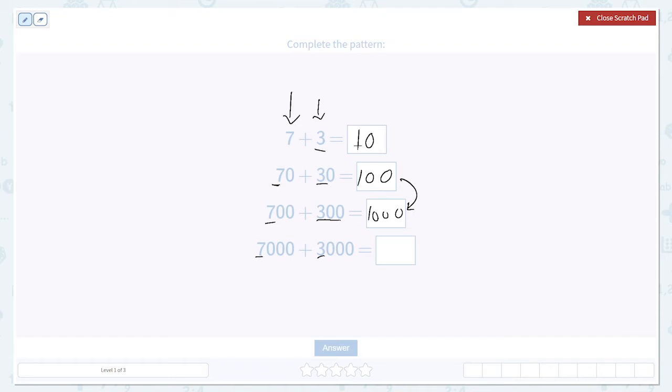Then 7000 plus 3000 is going to give us 10,000, which barely fits in this box. But once again, we can see we add another zero.